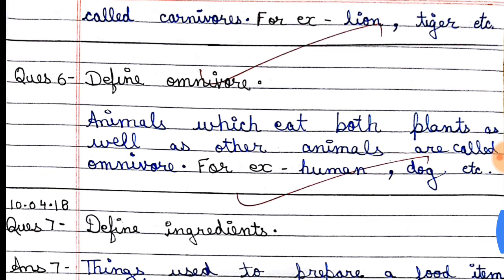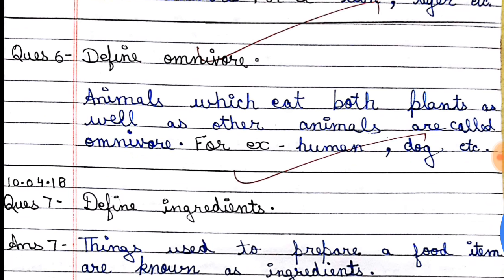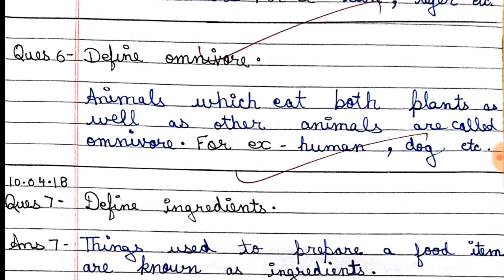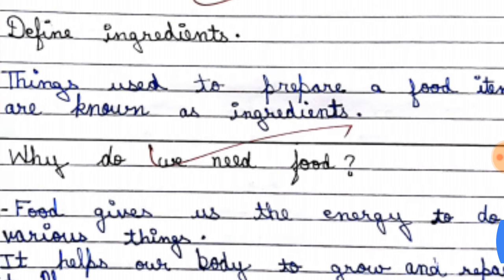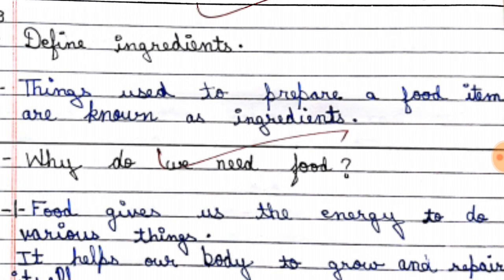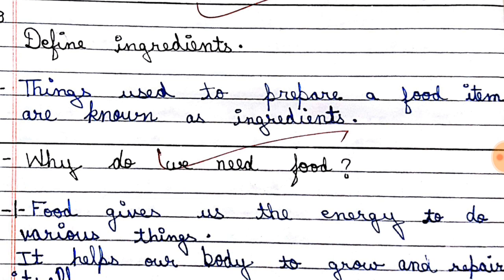Next, define omnivore. Omnivores are animals that eat both other animals and plant products — for example dog and bear. Animals which eat both plants as well as other animals are called omnivores. Next, define ingredients: things used to prepare food items are known as ingredients.